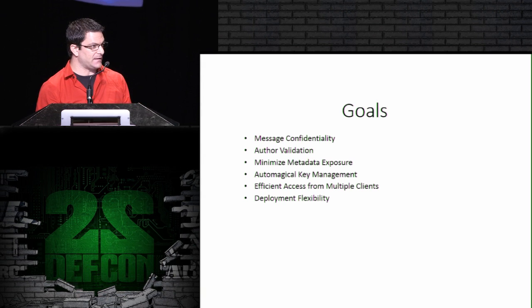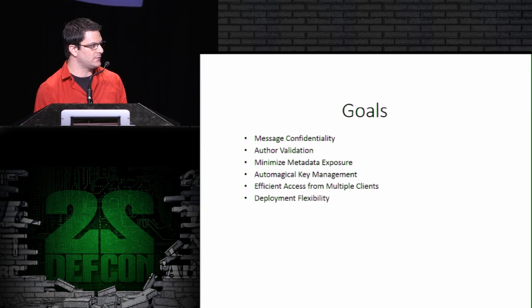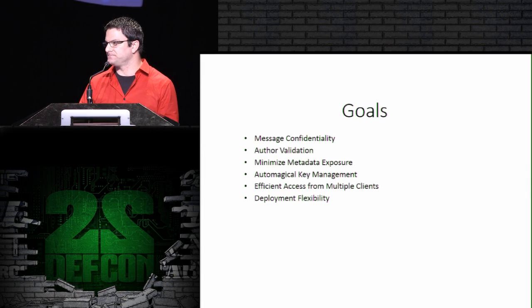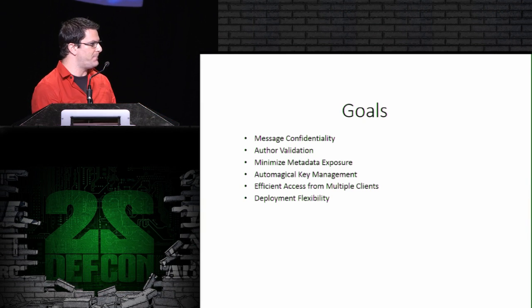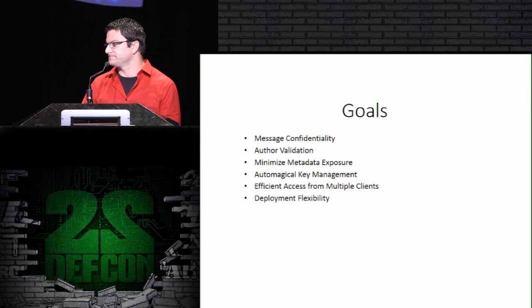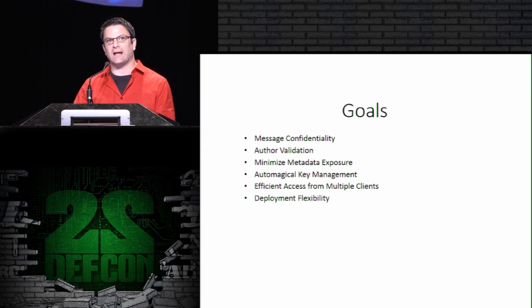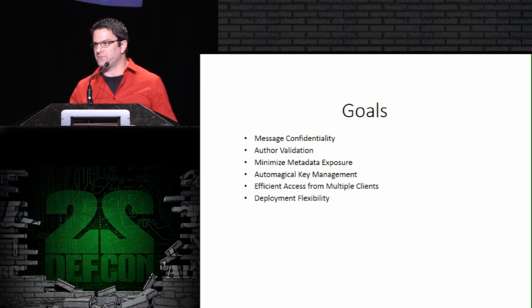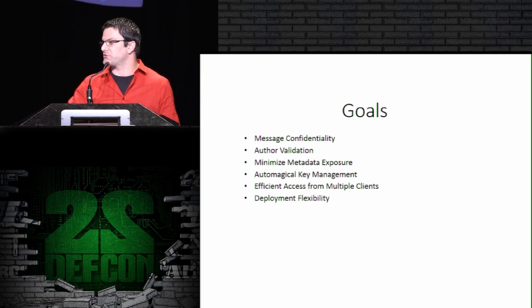PGP and S/MIME give us author validation and message confidentiality, but they don't do a very good job at any of the other goals. Darkmail was really started to achieve these additional goals: building a system that was secure, automatic, and could be accessed from different types of clients on different platforms with different constraints — in the very same way that we access email today — and built to handle Internet scale. Last time I checked, there were about 3 billion email users on this planet, which is the reason I got into the business.